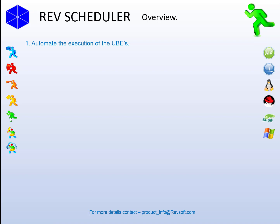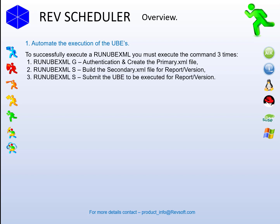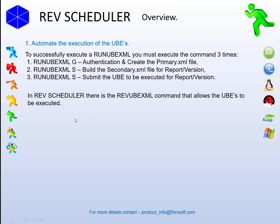The first thing we needed to do was to automate the execution of the UBE process. For anyone that's new to Enterprise One, to execute a single RunUBEXML process, you need to run the RunUBEXML command three times as shown here. So what we decided to do was make that simpler and create the RevUBEXML command that allows you to run the UBEs very simply in RevScheduler using a single command. This allows the UBEs to act as triggers for functions on local or remote servers, and also for the UBEs to be triggered by functions on local or remote servers as well.